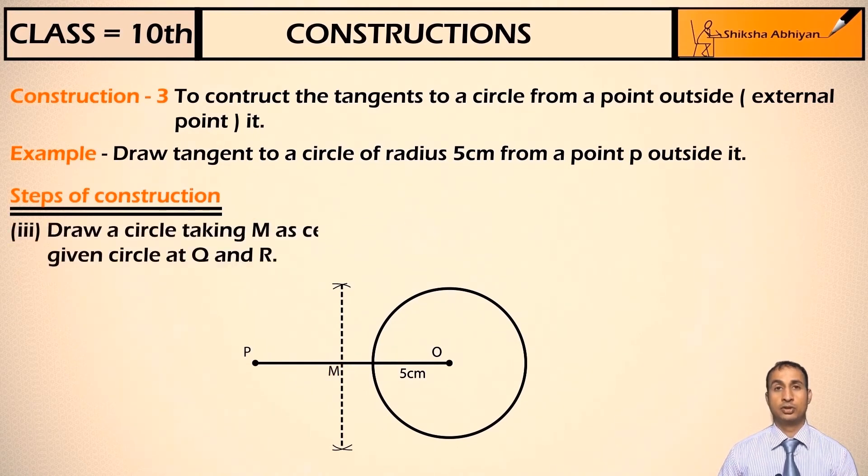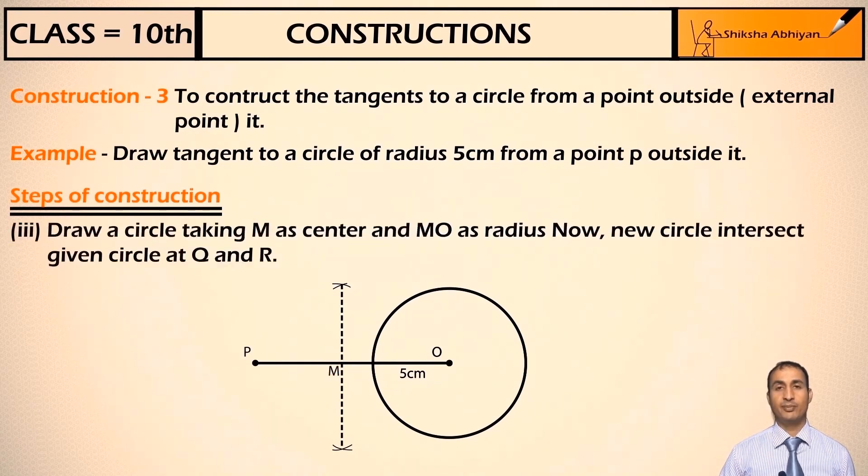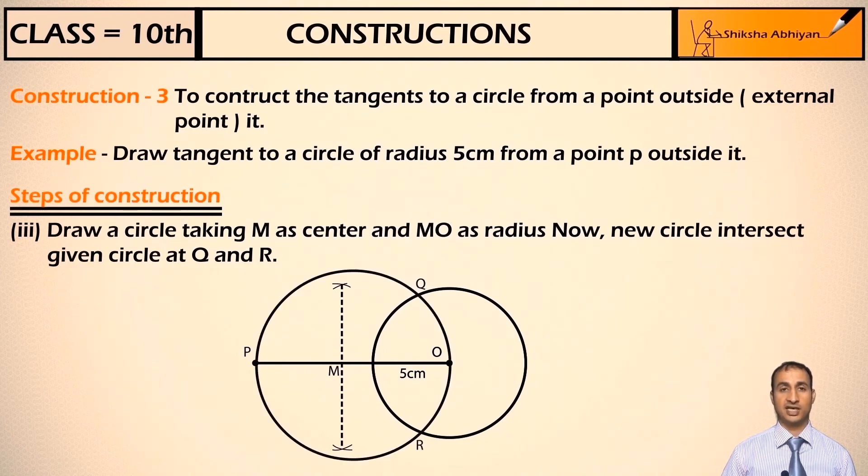Now students, draw a circle taking M as center and MO as radius. Now the new circle intersects the given circle at Q and R.